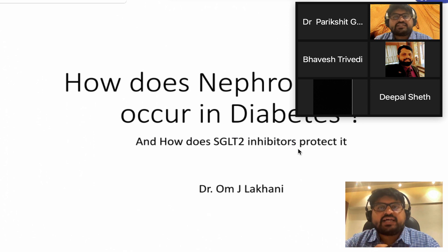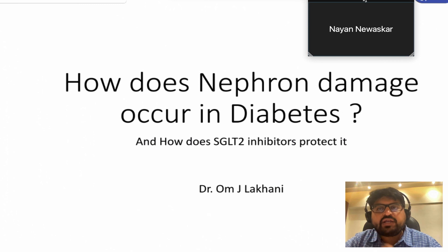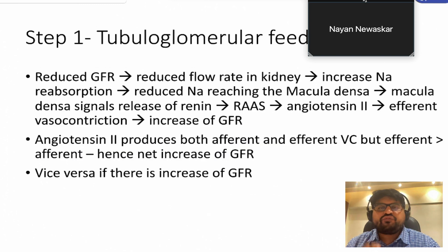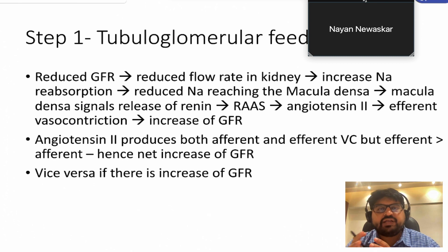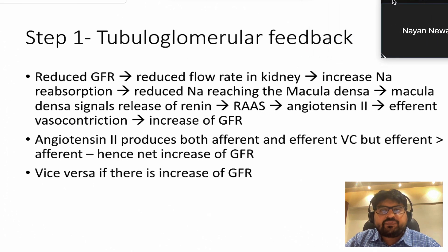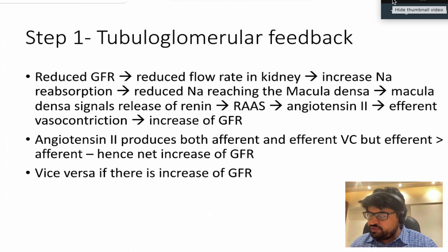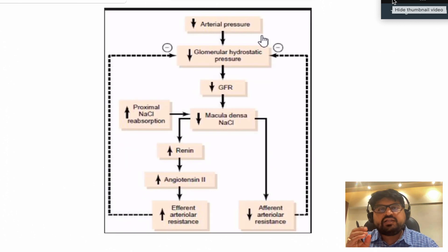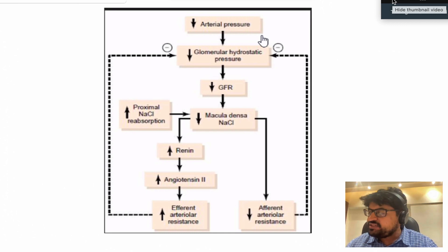In this few slides I am going to discuss how SGLT2 inhibitors protect the kidney and how nephron damage occurs in patients with kidney disease. The first thing you need to understand is the concept of tubuloglomerular feedback.